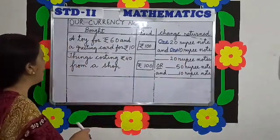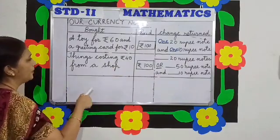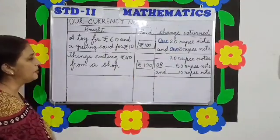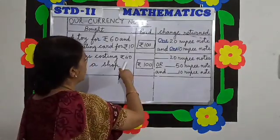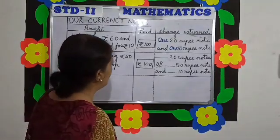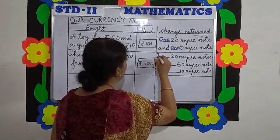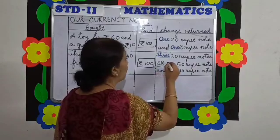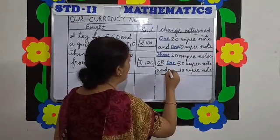If you buy things costing Rs. 40 from a shop and pay the shopkeeper Rs. 100, how much money will the shopkeeper return you? Rs. 100 minus Rs. 40 is equal to Rs. 60. The shopkeeper will either return you three Rs. 20 notes, or one Rs. 50 note and one Rs. 10 note.